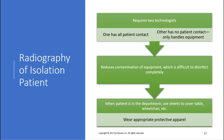Radiography in isolation requires two technologists. One has all patient contact; the other has no patient contact and handles only the equipment — this reduces contamination of equipment, which is difficult to disinfect. In MRI, if you're working solo, put on all the gear, bring the table out of the room if possible, and try not to touch the patient unnecessarily. When a patient is in the department, use sheets to cover the table, wheelchair, or equipment. In MRI, wrap patients in sheets like a burrito roll so they're not directly contaminating the bore. Wear the protective equipment — don't be lazy.